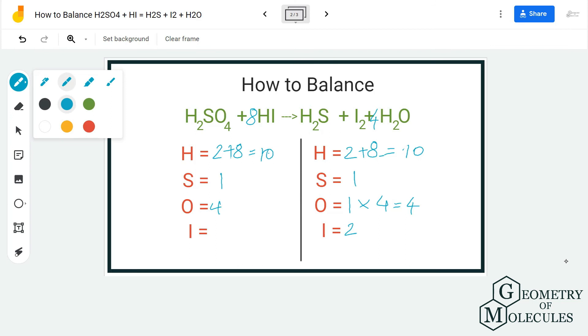Now you have a balanced equation in which we have 10 hydrogen atoms, 1 sulfur atom, 4 oxygen atoms, and 8 iodine atoms on both sides. This is how you can balance the equation.